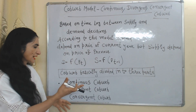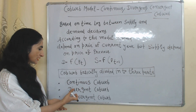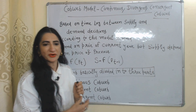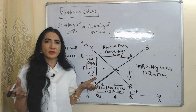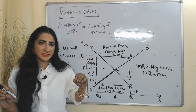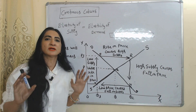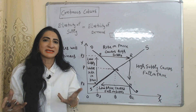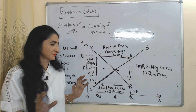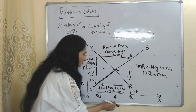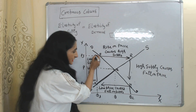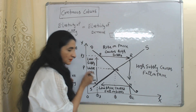The Cobweb model is basically divided into three parts: continuous cobweb, divergent cobweb, and convergent cobweb. We will discuss each one by one. In the case of continuous cobweb, elasticity of demand is equal to elasticity of supply, meaning supply and demand will equally respond to changes in price. In this diagram, on the X-axis we have quantities and on the Y-axis we have prices. DD is the demand curve and SS is the supply curve.